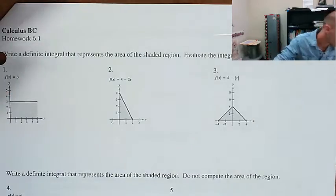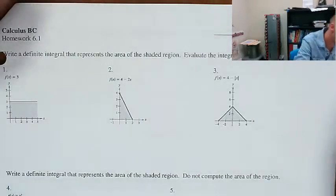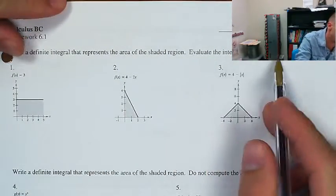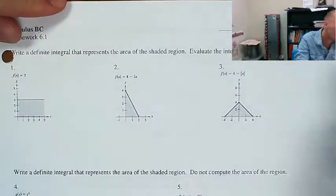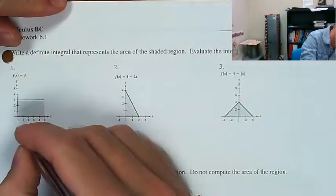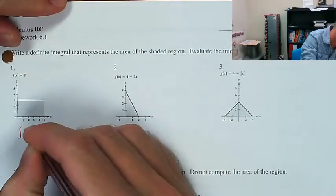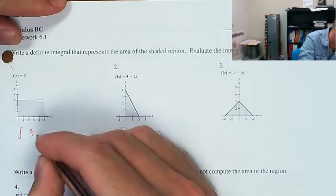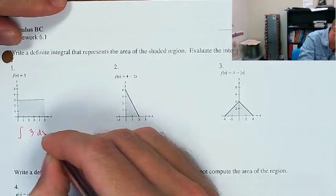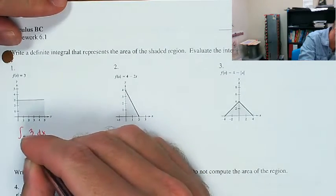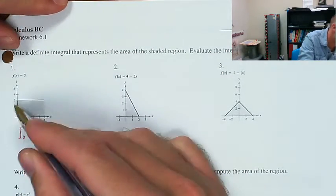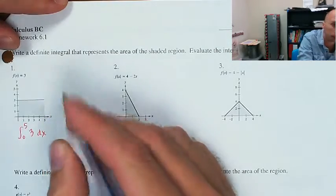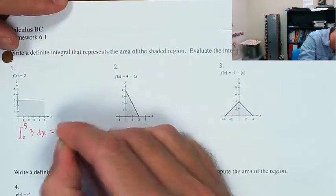The first set of problems: write a definite integral that represents the area of the shaded region, evaluate it using geometry. So this is f(x) = 3, so it's going to be the integral of 3 as x runs from 0 to 5, dx. This is a rectangle with width 5 and height 3, so that's going to be equal to 15.